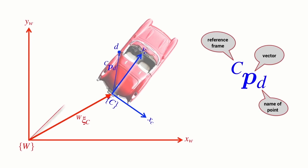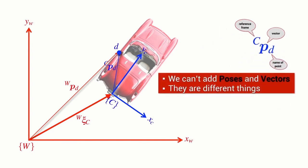Now let's consider that I want to know what this vector is — the point D with respect to the world coordinate frame. In some simplistic way, what I want to do is add these two arrows: move along here and then move along here. But it's not quite that simple. We can't add a pose and a vector. We can't add a fat arrow to a thin arrow. Poses and vectors are different mathematical objects, so we need to do this a little bit carefully.